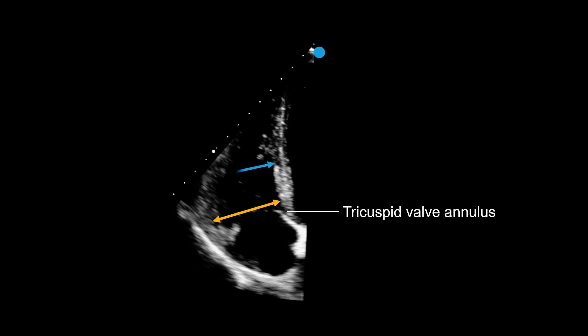Dimension two, the mid diameter, is taken across the middle of the chamber, just below the papillary muscles. Both of these measurements are taken from the interventricular septum to the right ventricular endocardium, on the left of the screen. Lastly, dimension three measures the length of the right ventricle, from the middle of the tricuspid annulus to the apex.